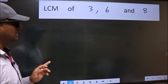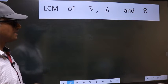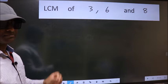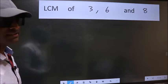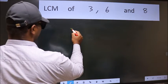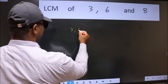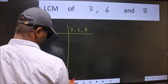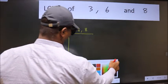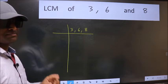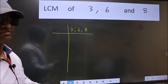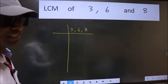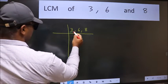LCM of 3, 6 and 8. To find this LCM, we should frame it in this way: 3, 6, 8. This is your step 1. Now we should focus on the first number, which is 3 here.